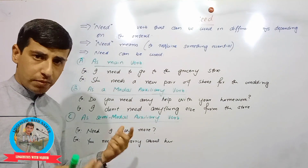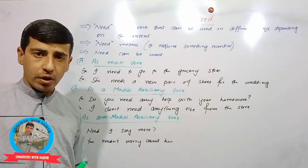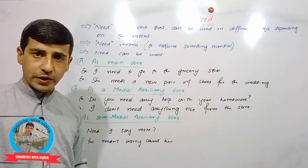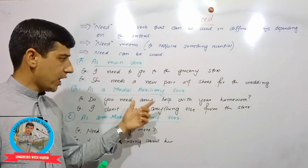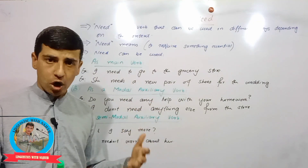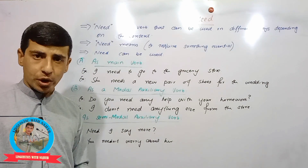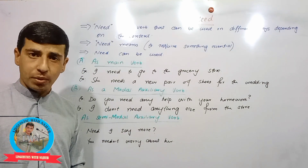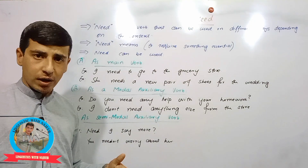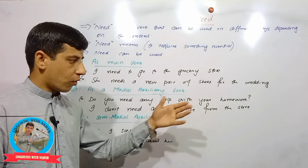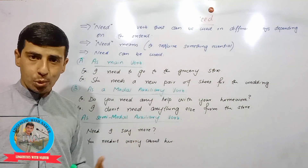And number B, need can be used as a modal auxiliary verb. For example, 'Do you need anything or any help with your homework?' In this sentence, need is used as a modal verb. And example number two, 'I don't need anything else from the store.' So, need is used as a modal verb.